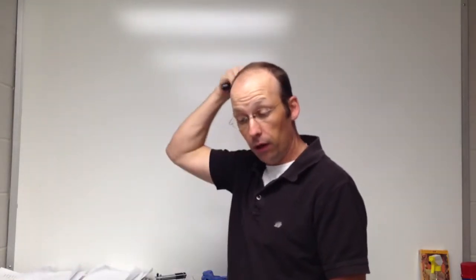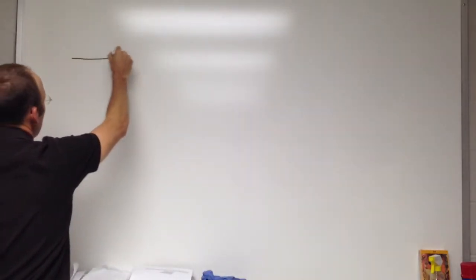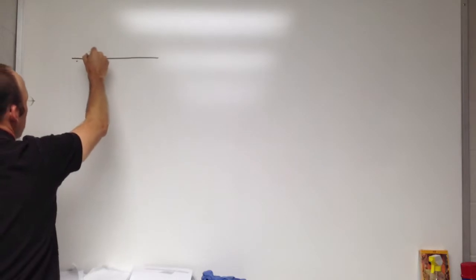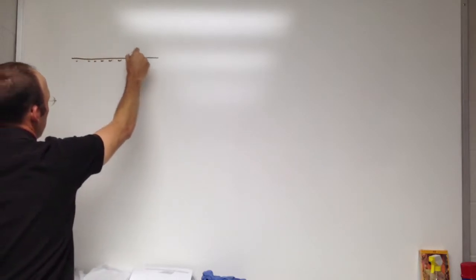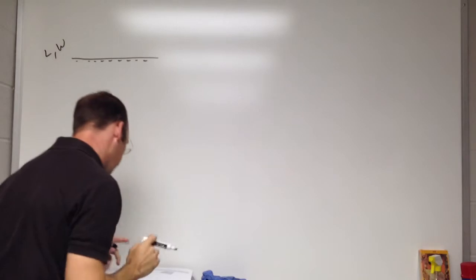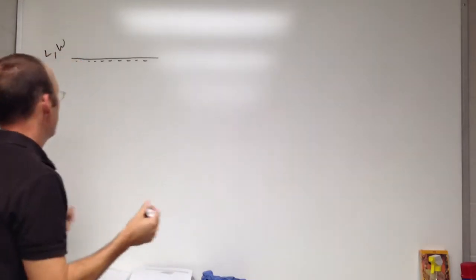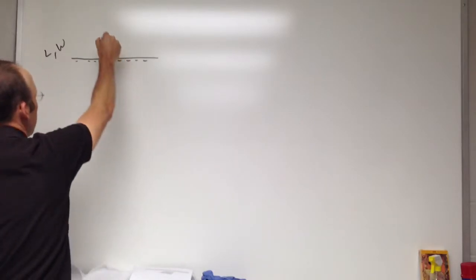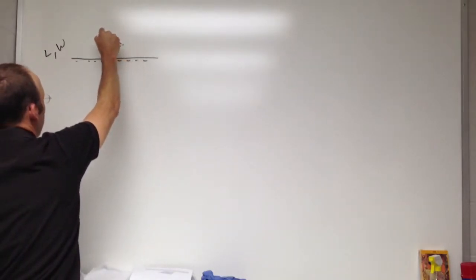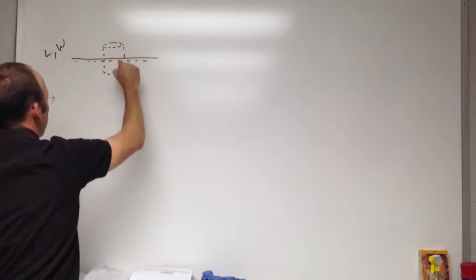I told you I would work out the quiz problem. So here we have a sheet — it's got a negative charge on it, it's L by W, that's the dimensions. And you want to find the electric field due to this with a Gaussian surface. They actually tell you to try a cylinder like that.